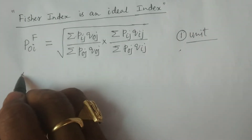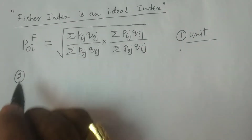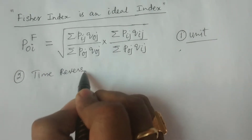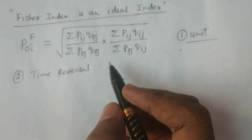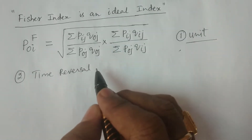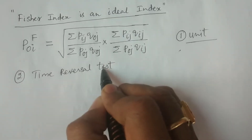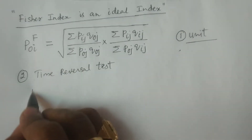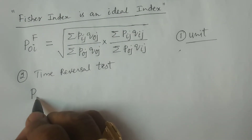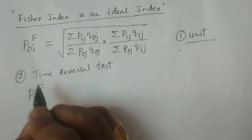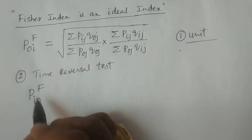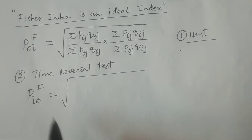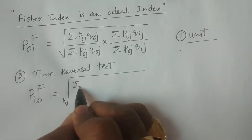Now we check the second test: the time reversal test. I am checking how many tests are satisfied by the Fisher index. For the time reversal test, we start with P₀ᵢ Fisher already written. We interchange the two time periods — 0 with i and i with 0 — and then multiply. The result should equal 1.